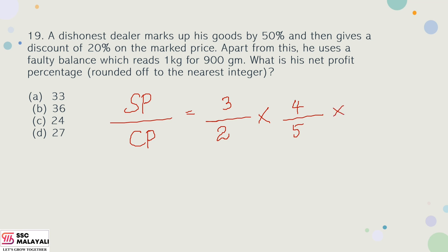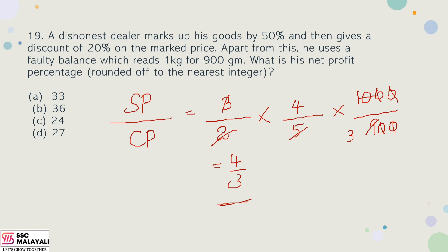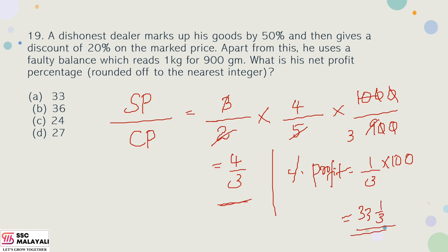For the faulty balance: 1 kg is actually 900 grams, meaning 1000 grams is sold as 900 grams. Simplifying, the ratio becomes 4 by 3. Profit percentage is (1/3) × 100 = 33 and 1/3 percent, approximately 33.33%. That is the answer.